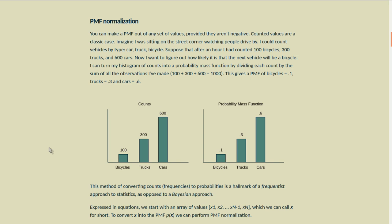Now I want to figure out how likely it is that the next vehicle will be a bicycle. I can turn my histogram of counts into a probability mass function by dividing each count by the sum of all the observations I've made. So 100 plus 300 plus 600 equals 1000. This gives a PMF of bicycles of 0.1, trucks of 0.3, and cars of 0.6.